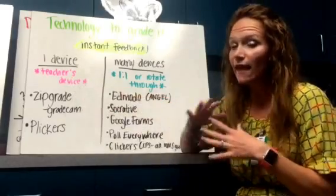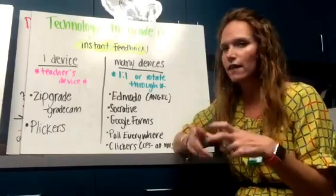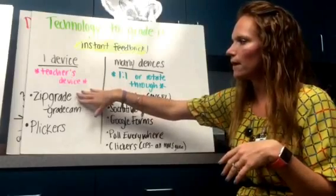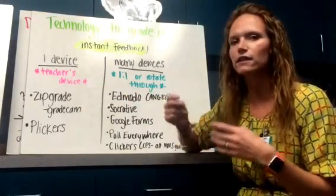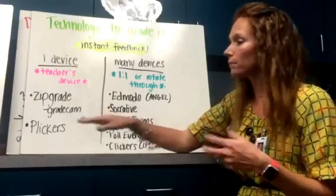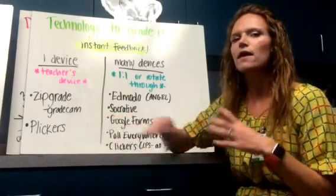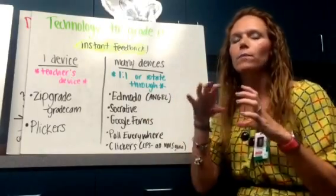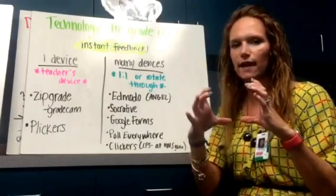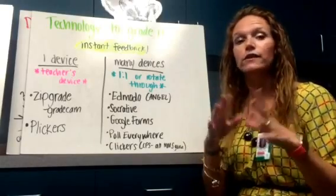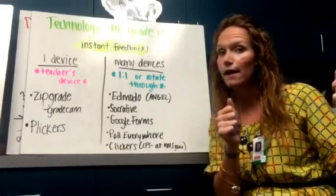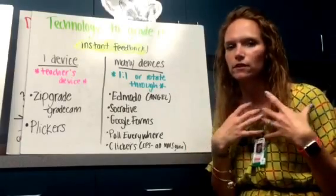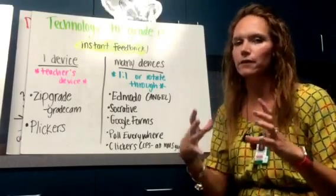With ZipGrade, you just hold your camera over a scantron that you print out yourself — you can even laminate them and use dry erase markers to save paper. You hold the camera over it, it scans the results, and gives you instant feedback with the score. Plickers is in a similar realm — it also uses the device's camera, but in this version, students hold up individual QR codes. Depending on which direction is up determines the answer: A, B, C, or D, since it's square with four sides. Each student's QR code looks different, so there's no cheating. Their Plicker card is really personalized — it looks different than everybody else's.